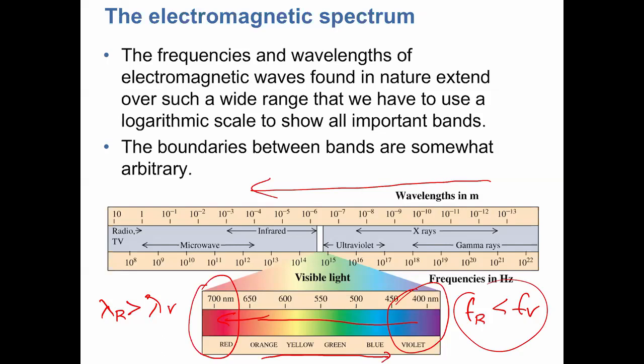In the electromagnetic spectrum, our eyes are only sensitive to a tiny range of it. We have radio waves, then microwaves, then infrared — those are wavelengths before red, which is why it's called infrared. Those are very large wavelengths, larger than visible light, with lower frequency and lower energy associated with them. Beyond our visible spectrum there is ultraviolet, which has higher frequency but lower wavelength.